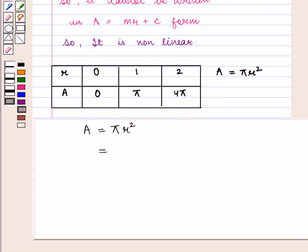We can see if we put the value of r as 0 we get the value of A as 0. If we put r = 1 we get A = π. Similarly if we put r = 2 we get A = 4π.